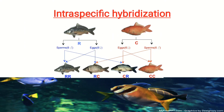In hybridization, crossbreedings are done between members of the same species or different species. If the crossing is done between the same species, it is called intraspecific. If it is between different species, it is called interspecific. And if it is between different genera, it is known as intergeneric hybridization.